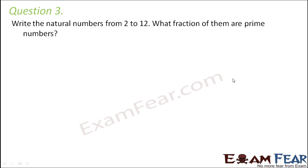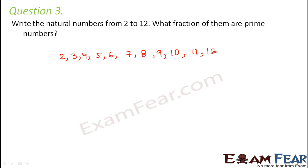Question number three: write the natural numbers from 2 to 12. So the numbers are: 2, 3, 4, 5, 6, 7, 8, 9, 10, 11, and 12. What fraction of them are prime numbers? Let's mark the prime numbers: 2 is prime, 3 is prime, 4 is not, 5 is prime, 7 is prime, and 11 is prime.